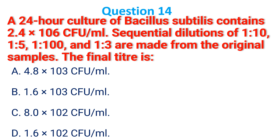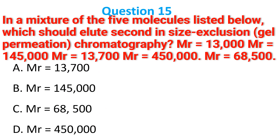A 24-hour culture of Bacillus subtilis contains 2.4 × 10⁶ CFU per ml. Sequential dilutions of 1:10, 1:10⁵, 1:100, and 1:10³ are made from the original sample. The final plate count is the correct answer B: 1.6 × 10³ CFU per ml.